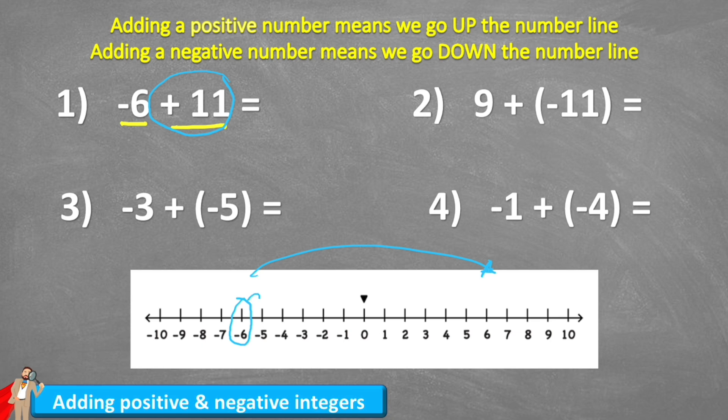Let's make our 11 jumps. One, two, three, four, five, six, seven, eight, nine, 10, 11. And we land on five. So negative six plus 11 equals five.